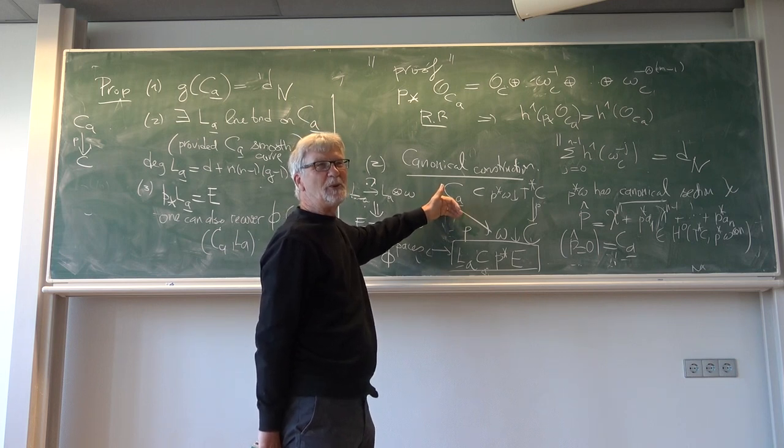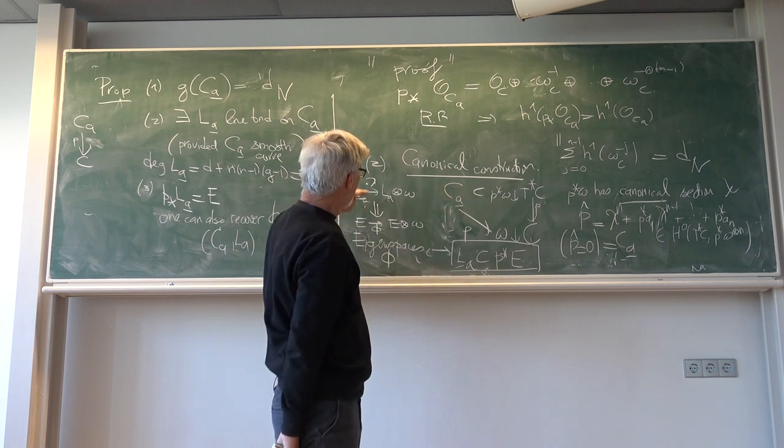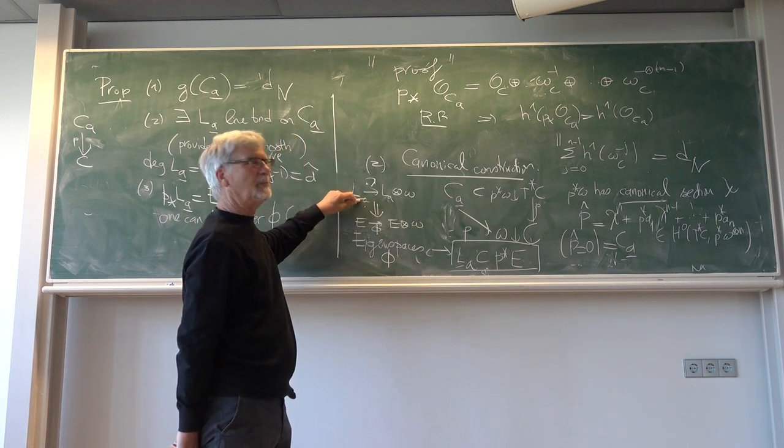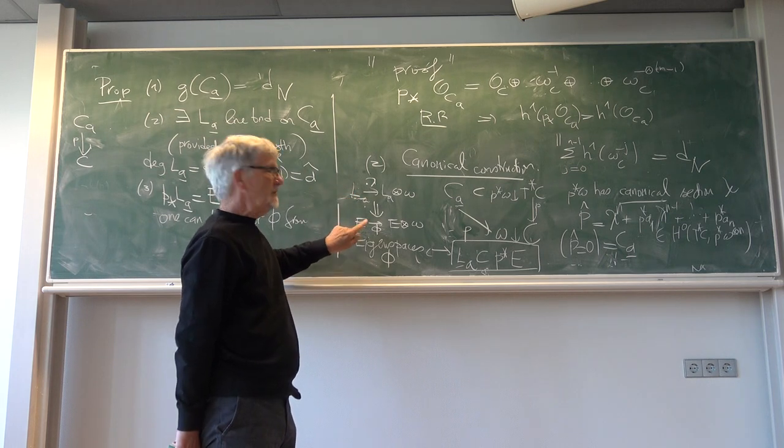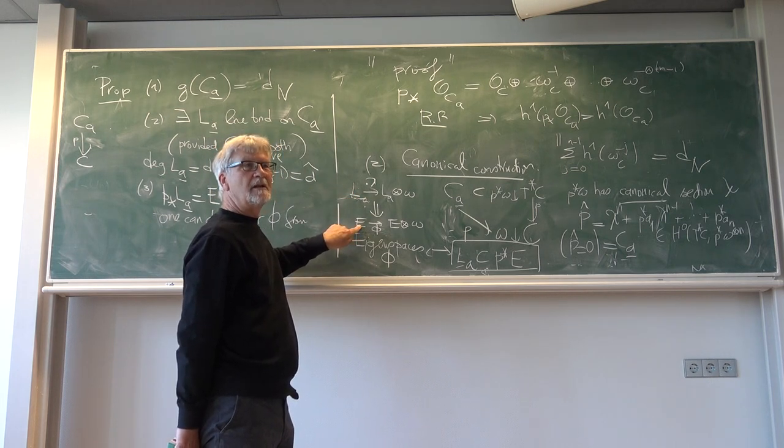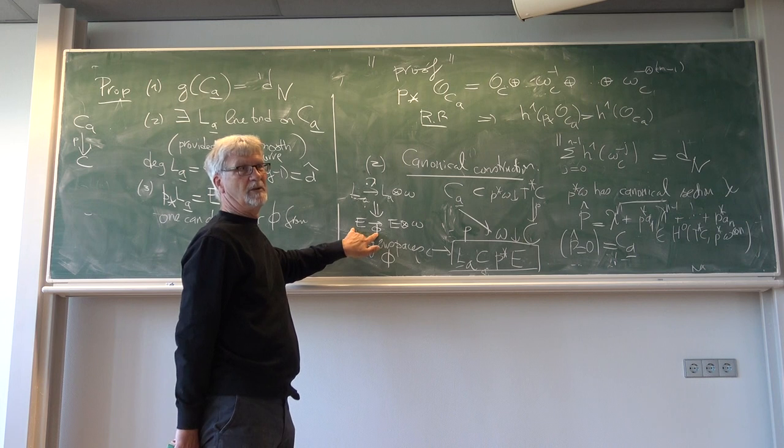It doesn't have sub-curves. So if I start with a line bundle here, any line bundle, maybe the vector bundle is not stable, but the pair is stable.